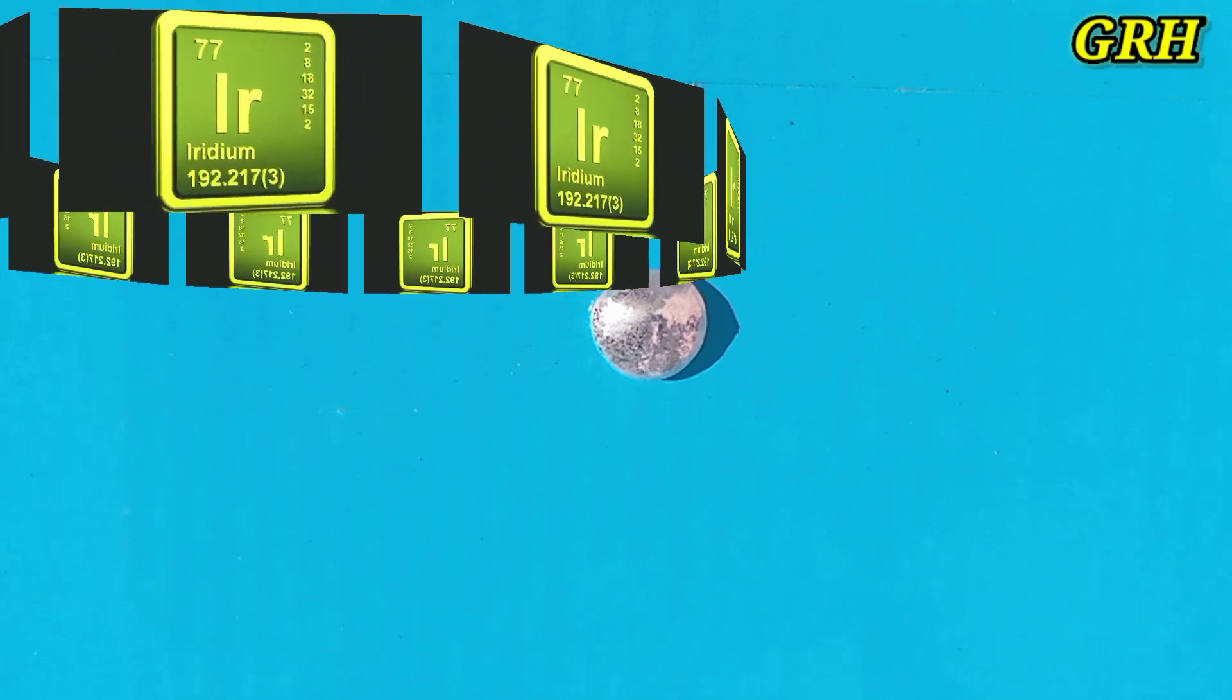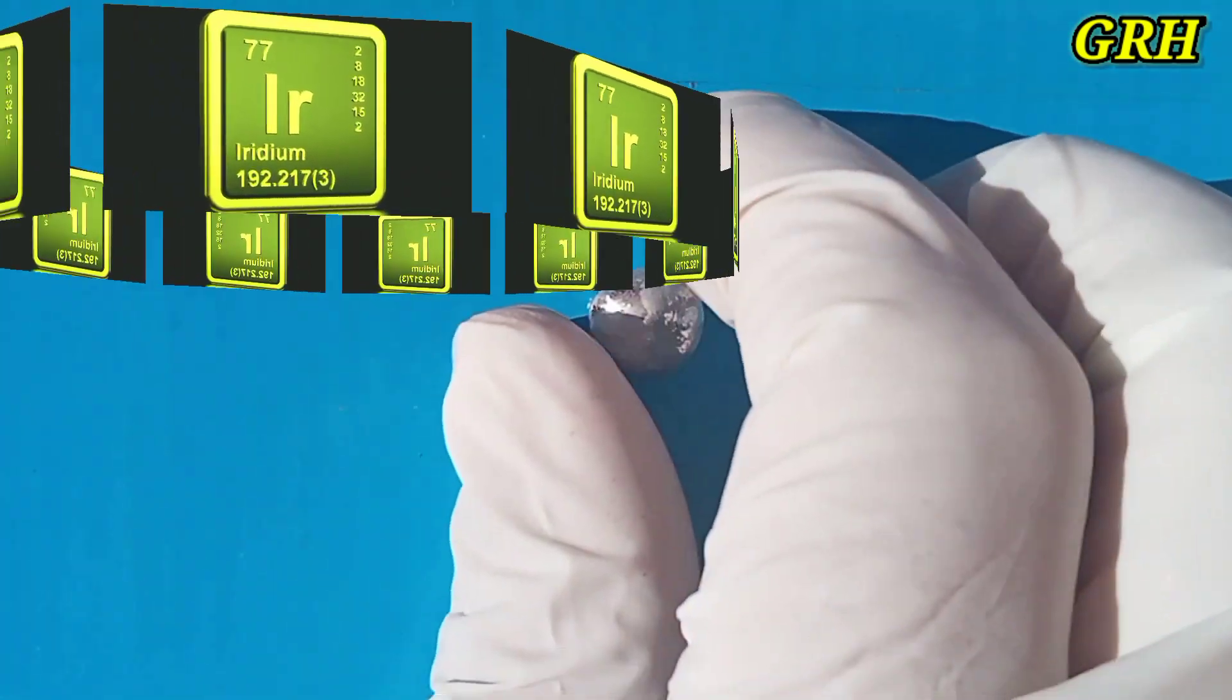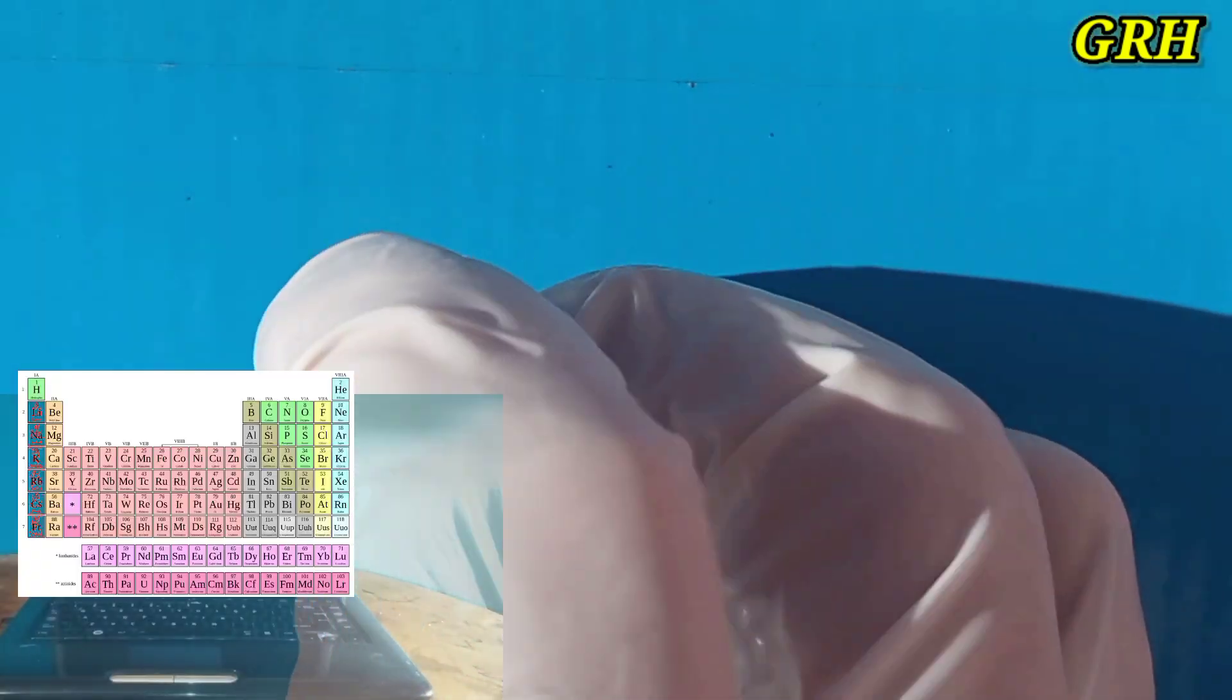Iridium is one of the rarest elements on earth. Iridium, IR, specific gravity 22.65. Iridium is in the platinum group of elements.